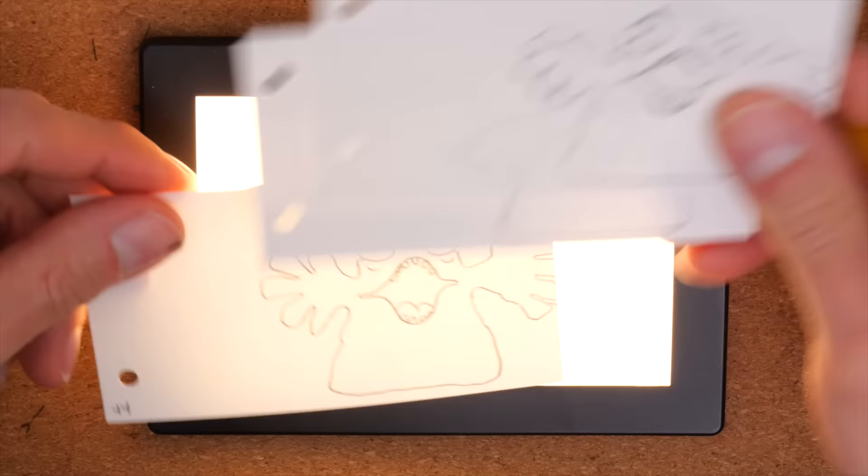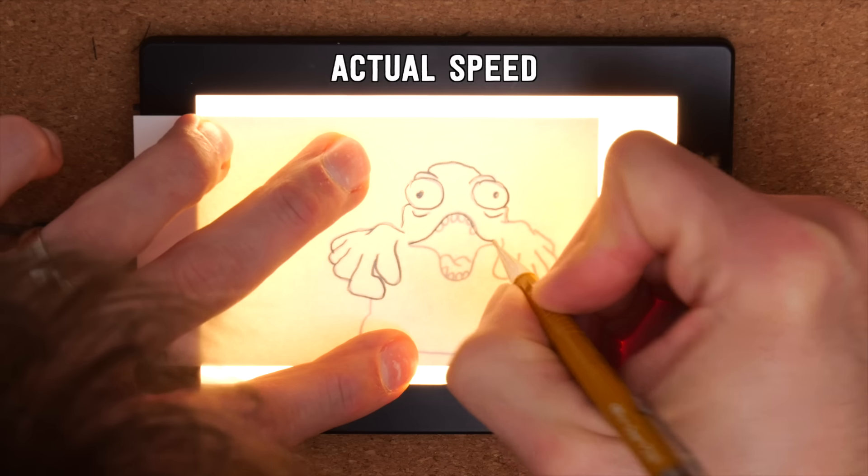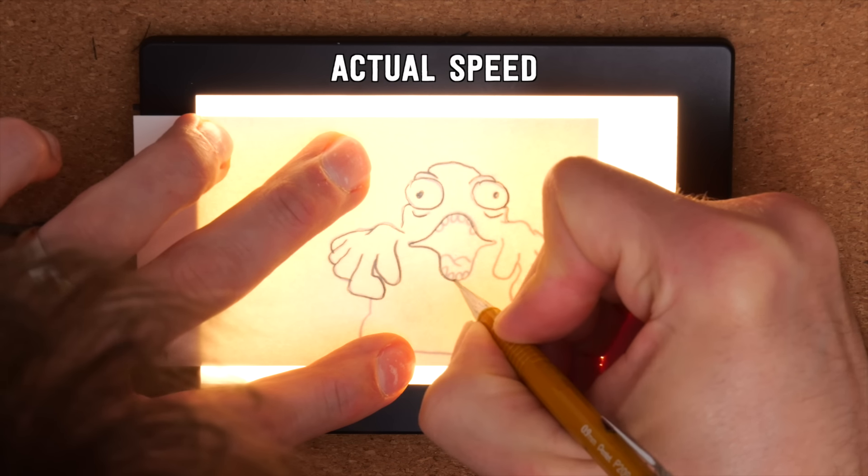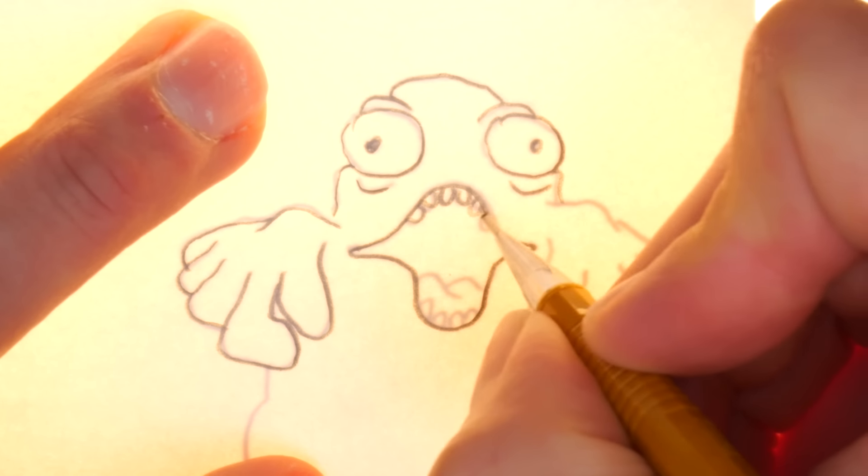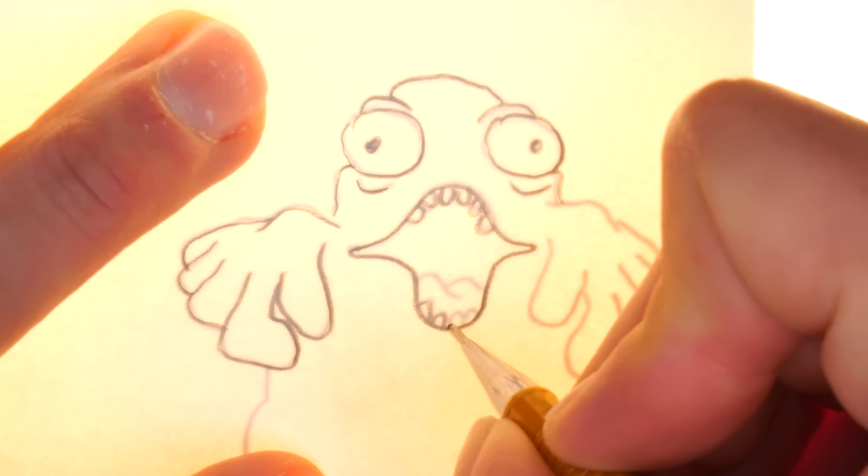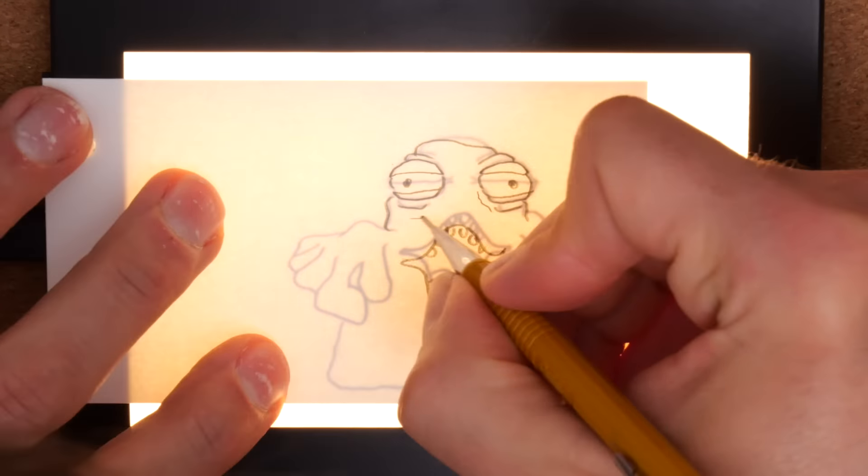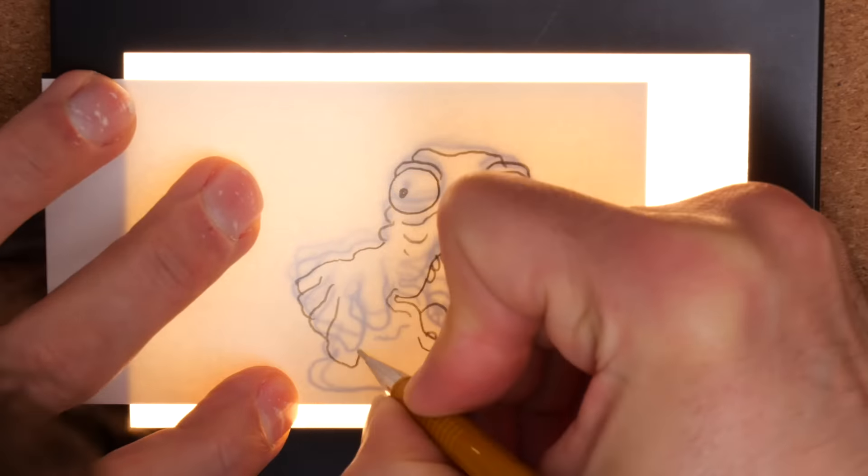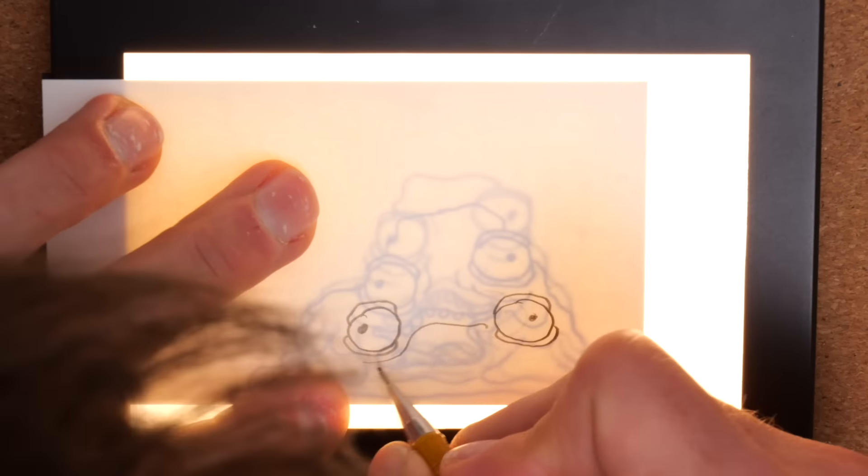And then what do we do with these hands with no arms? I guess they would just kind of hang there like awkward little T-Rex hands. The problem with this guy really is that he has no skeleton, so the only way that he holds any sort of form is by pure willpower.